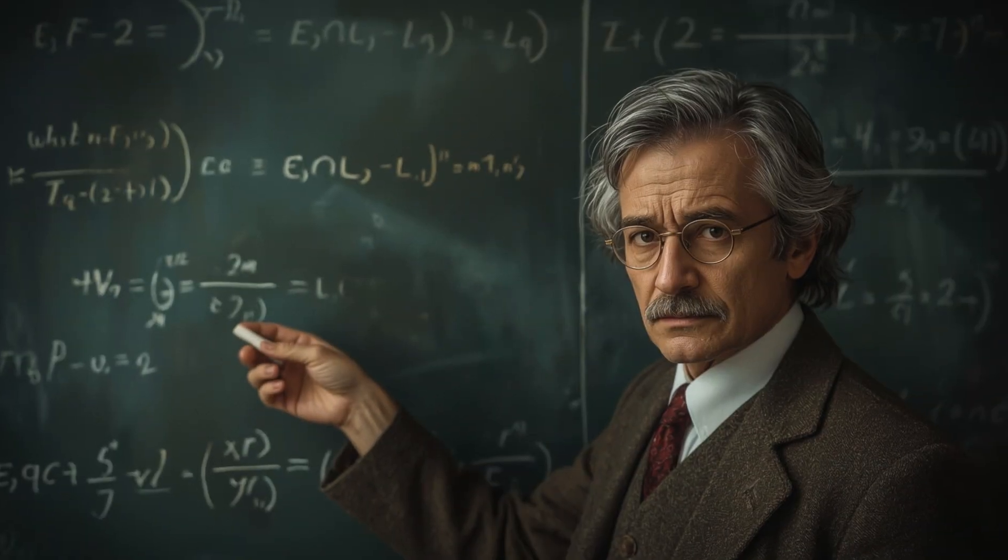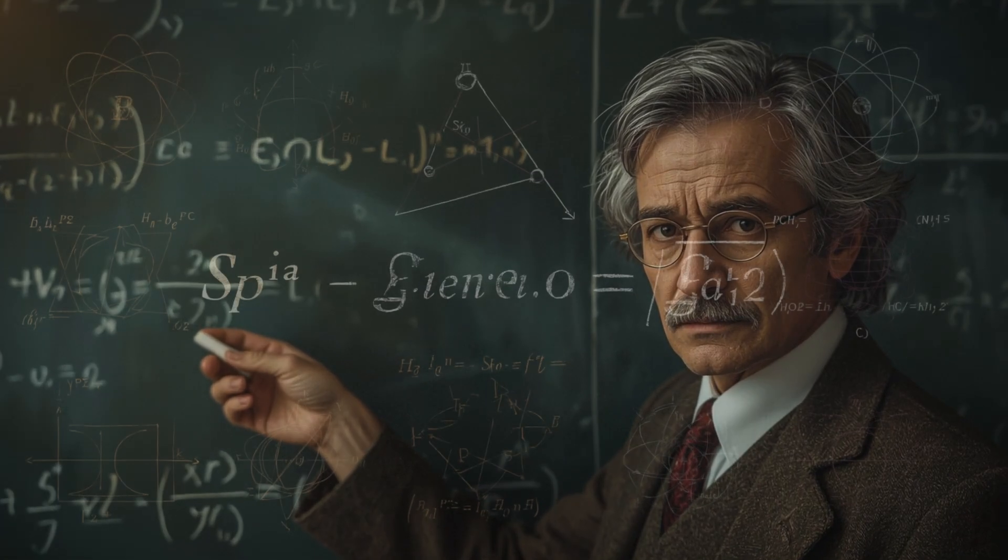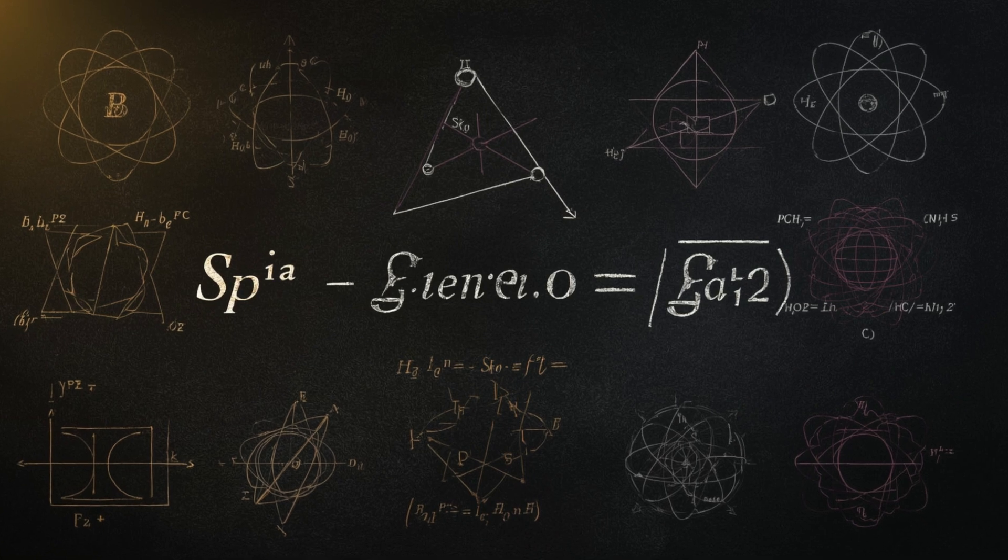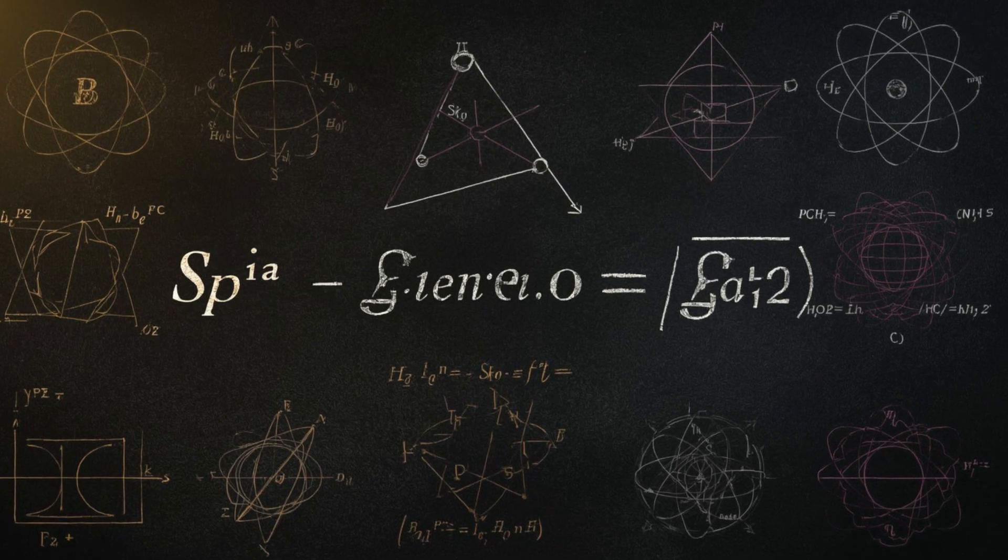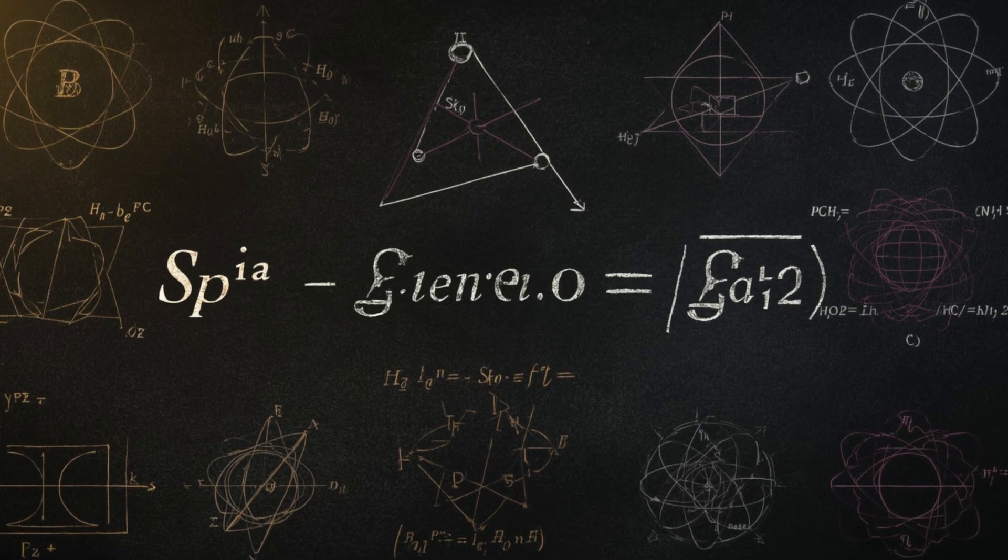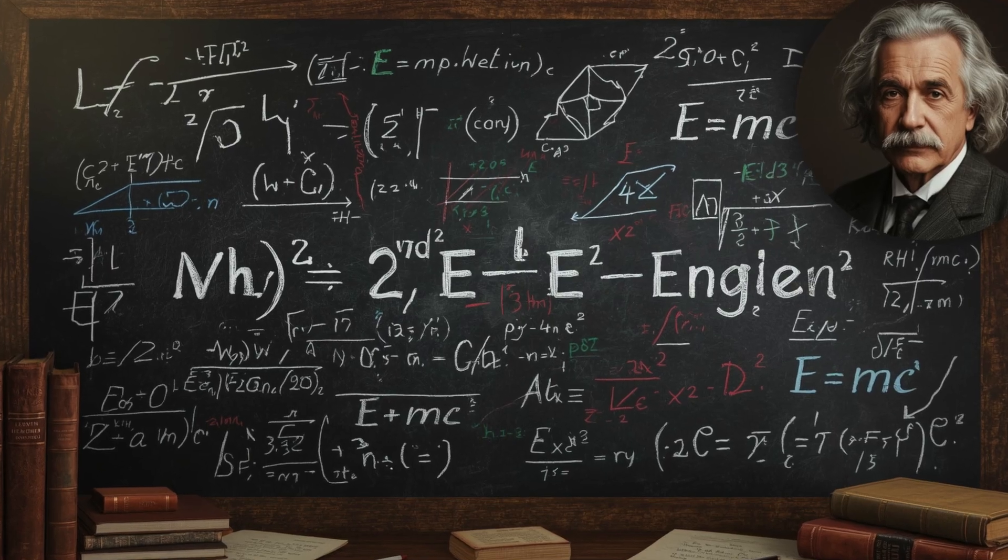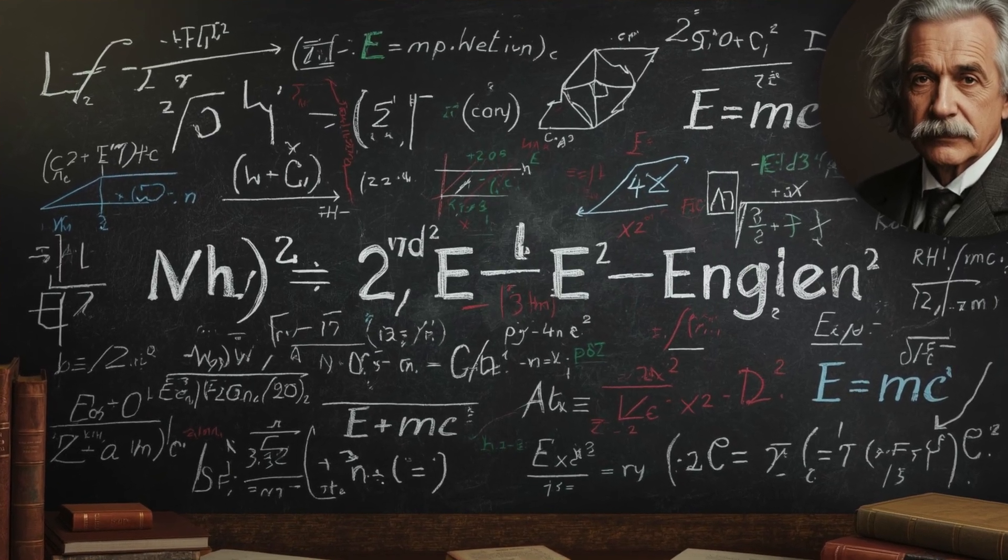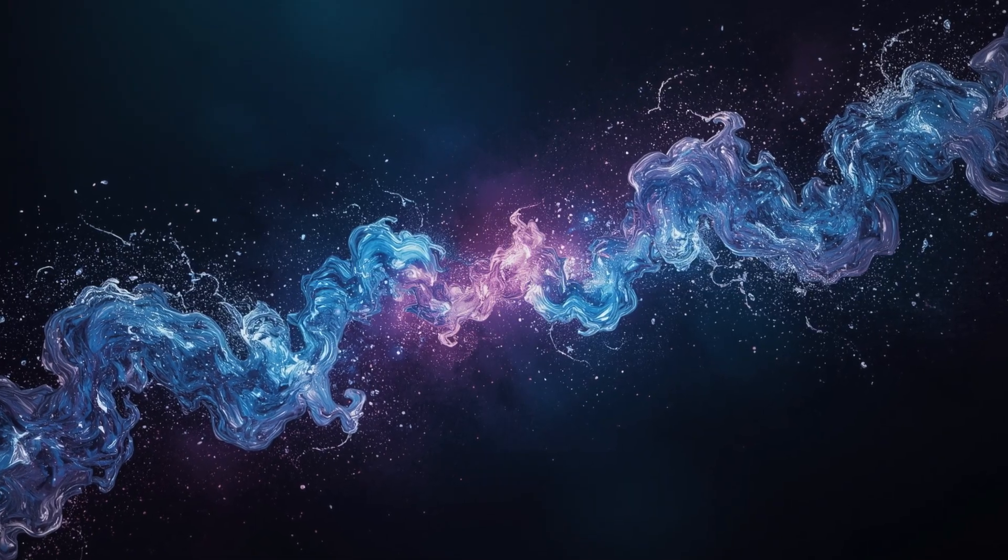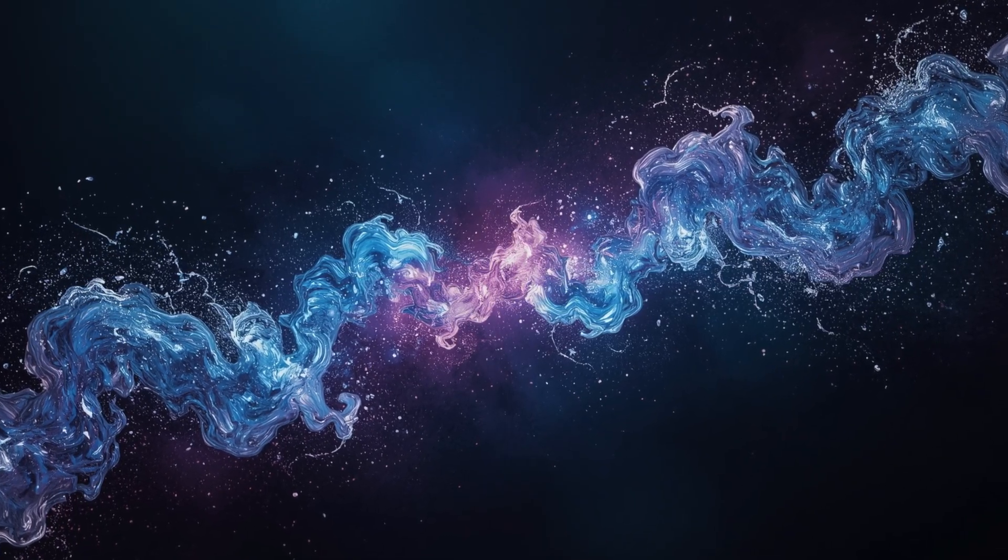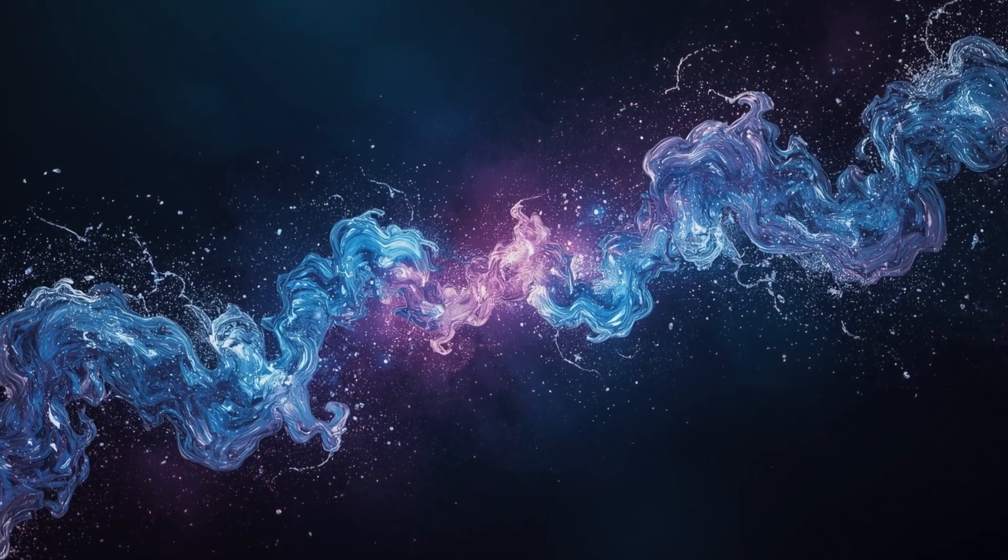In 1926, Erwin Schrödinger wrote an equation that would forever define the atom's inner life. It wasn't just a formula, it was a map of possibility. The Schrödinger equation describes how a quantum system evolves in time, giving rise to the wave function, a mathematical field of probabilities describing where a particle might be found. In simple terms, an electron isn't here or there until you look.